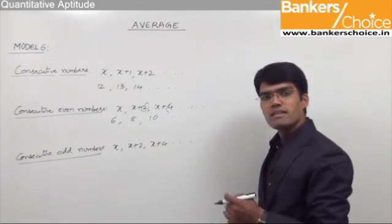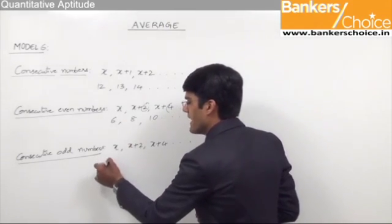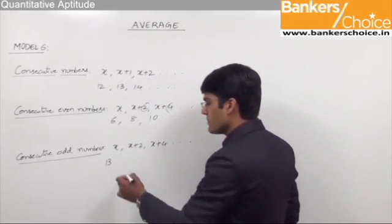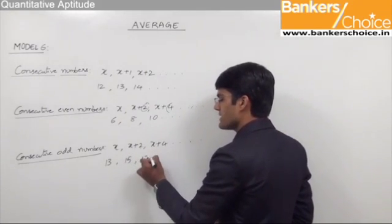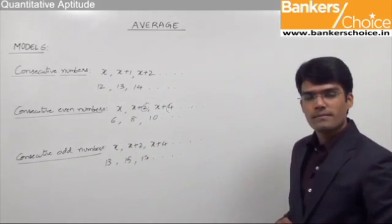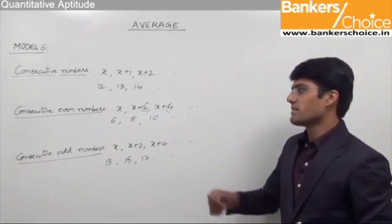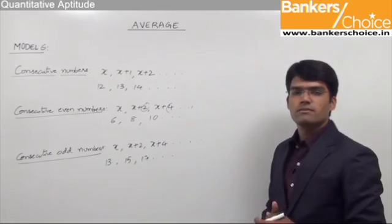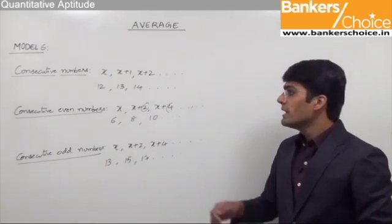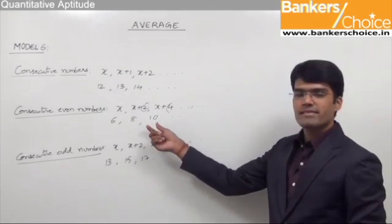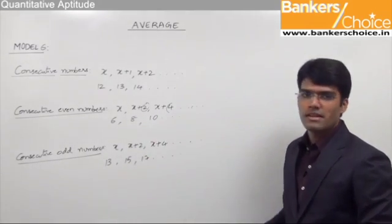Let us take an example of consecutive odd numbers. Let us assume x is an odd number, for example x is 13. So the next number would be 13 plus 2, that is 15, then 13 plus 4, that is 17 and so on. So we have consecutive numbers like 1, 2, 3 or 12, 13, 14; consecutive even numbers like 6, 8, 10; and consecutive odd numbers like 13, 15, 17 and so on.